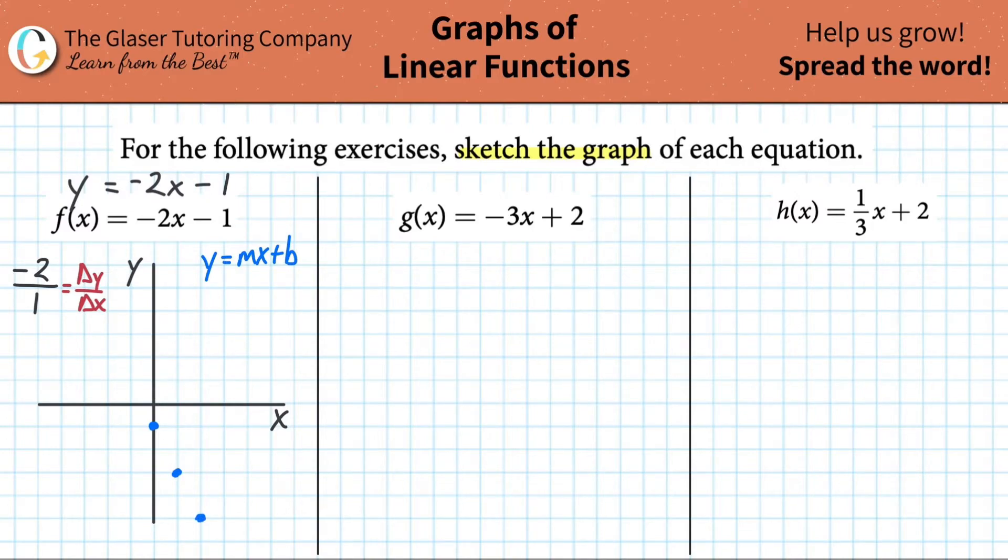Now you can also, interestingly enough, you can take this and basically move the sign if you wanted. You could call this fraction, this fraction is the same thing as saying 2 over negative 1. Because isn't 2 divided by negative 1 still negative 2, basically? And that's what the slope is.